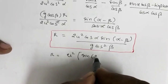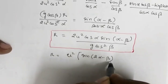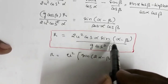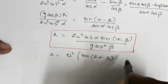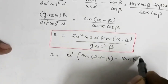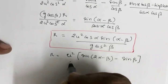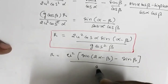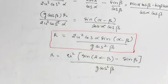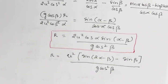Using the double angle identity, this can also be written as: R = u²·[sin(2alpha minus beta) minus sin(beta)] divided by g·cos²(beta). This is another way of expressing the range on the inclined surface.